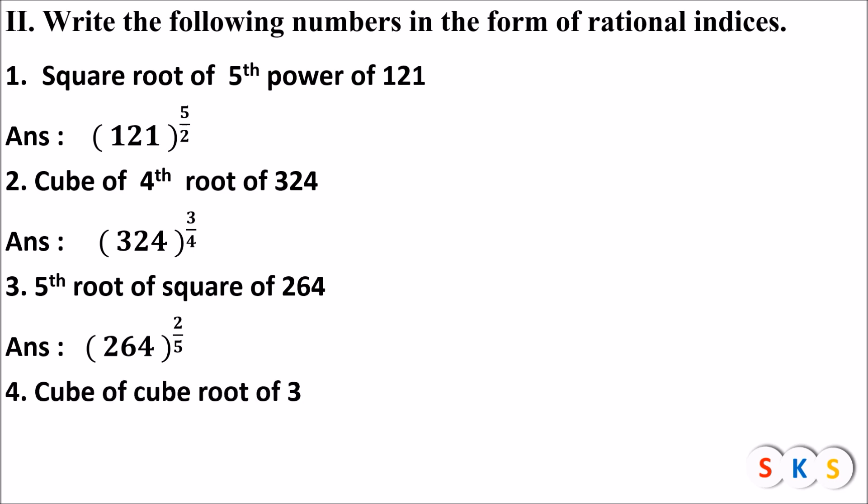Cube of the cube root of 3: the power is cube, which means third power — numerator is 3. Cube root means third root — denominator is 3. So the index would be 3 upon 3, and the index form is 3 raised to 3 upon 3.